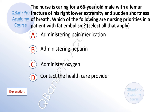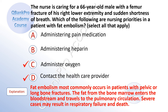The nurse is caring for a 66-year-old male with a femur fracture of his right lower extremity and sudden shortness of breath. Which of the following are nursing priorities in a patient with fat embolism? Select all that apply. A. Administering pain medication. B. Administering heparin. C. Administer oxygen. D. Contact the healthcare provider. The correct answers are C and D. Fat embolism most commonly occurs in patients with pelvic or long bone fractures. The fat from the bone marrow enters the bloodstream and travels to the pulmonary circulation, and severe cases may result in respiratory failure and death.